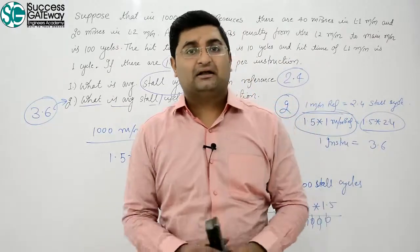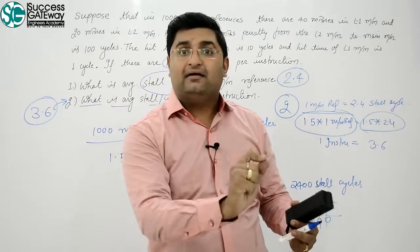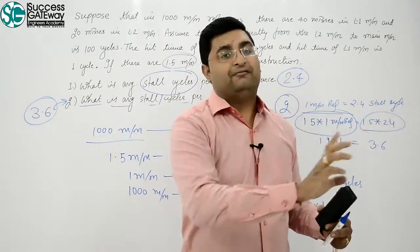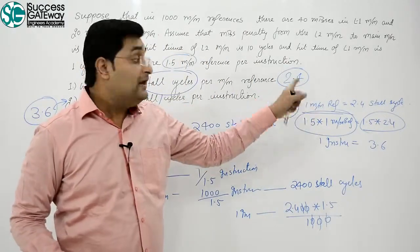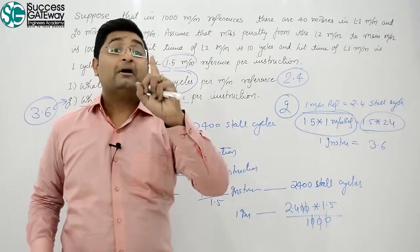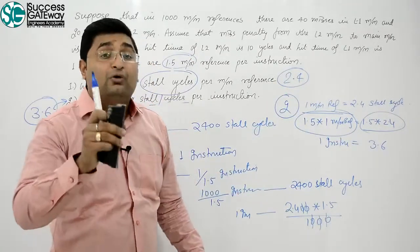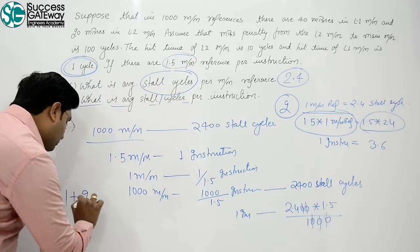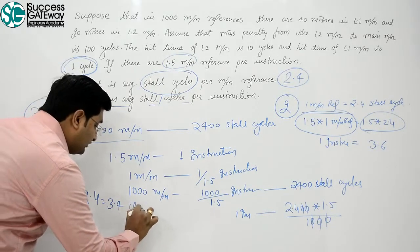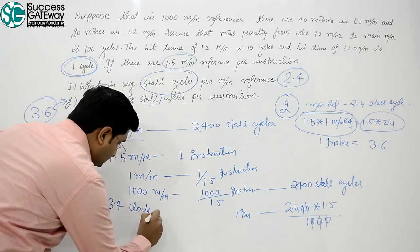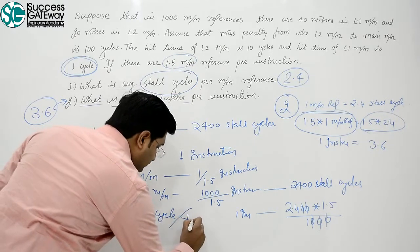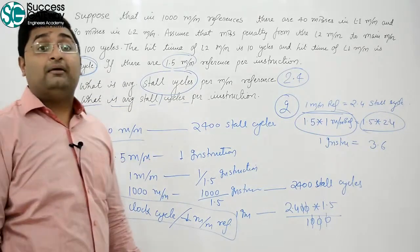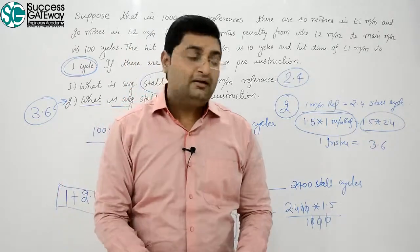One more question that can be asked from this problem: what is the average clock cycles per memory reference? The stall cycles are 2.4 extra per memory reference, but even if everything were a 100% hit, you still need 1 cycle for L1. So average clock cycles per memory reference = 1 + 2.4 = 3.4 clock cycles per memory reference. This holds when L1 hit time is 1 clock cycle.